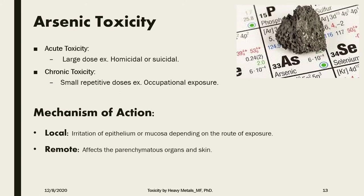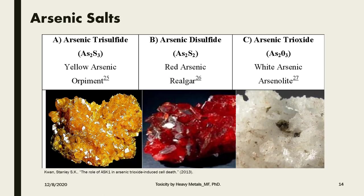Remote action affects parenchymatous organs such as the liver, brain, kidneys, and heart. The different salts of arsenic come in different colors — the yellow powder could be added to eggs, the red one to food with tomato sauce, and white arsenic is easily added to different kinds of food without being noticed by the victim. This is why arsenic is very commonly used in homicidal incidents.